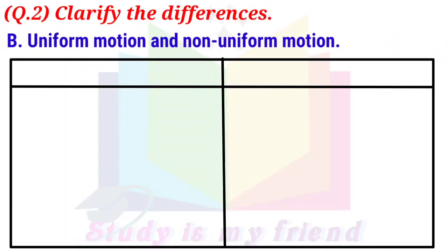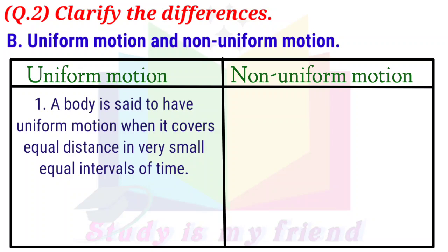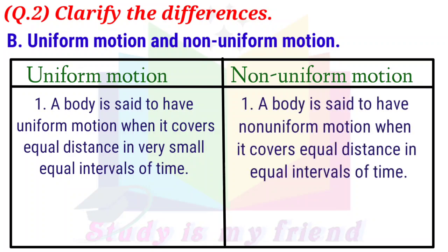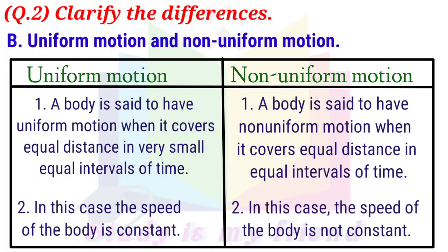Uniform motion and non-uniform motion. Uniform motion: A body is said to have uniform motion when it covers equal distance in very small equal intervals of time. In this case, the speed of the body is constant. Non-uniform motion: A body is said to have non-uniform motion when it covers unequal distance in equal intervals of time. In this case, the speed of the body is not constant.